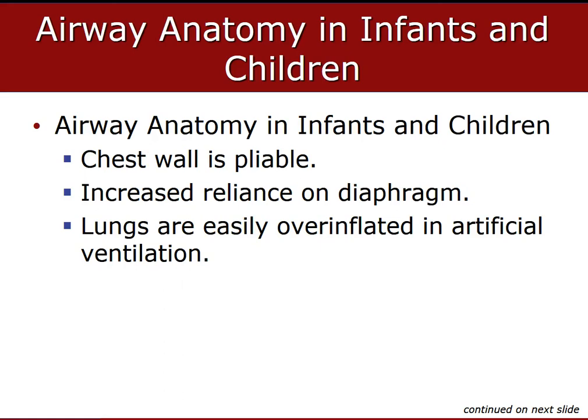Regarding pediatric chest wall pliability: infants and children have a greater reliance on the diaphragm for breathing compared to adults. Their chest wall is extremely pliable — ribs haven't calcified and aren't rigid yet — so they are very easily over-inflated with artificial ventilation. It's critical to use the appropriate bag-valve mask sized for the child or infant, not an adult BVM, because you will over-inflate the lungs and cause barotrauma.